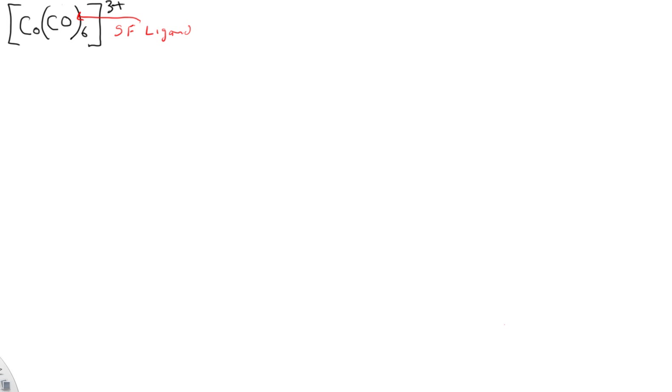And so I'm going to first draw the electron arrangement according to the valence bond theory. So let's look at cobalt-3 and we're going to look at the 3D electrons.